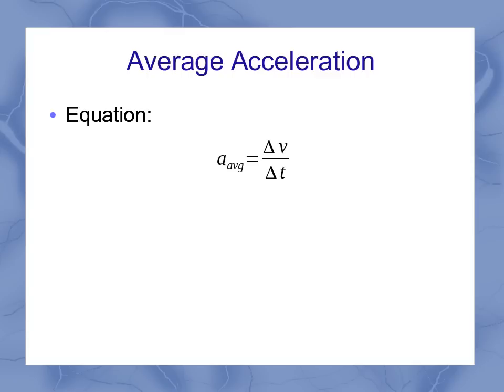If we were to write out those deltas, because remember that triangle is the Greek letter delta, that delta v over delta t can be rewritten in terms of the initial and final values.